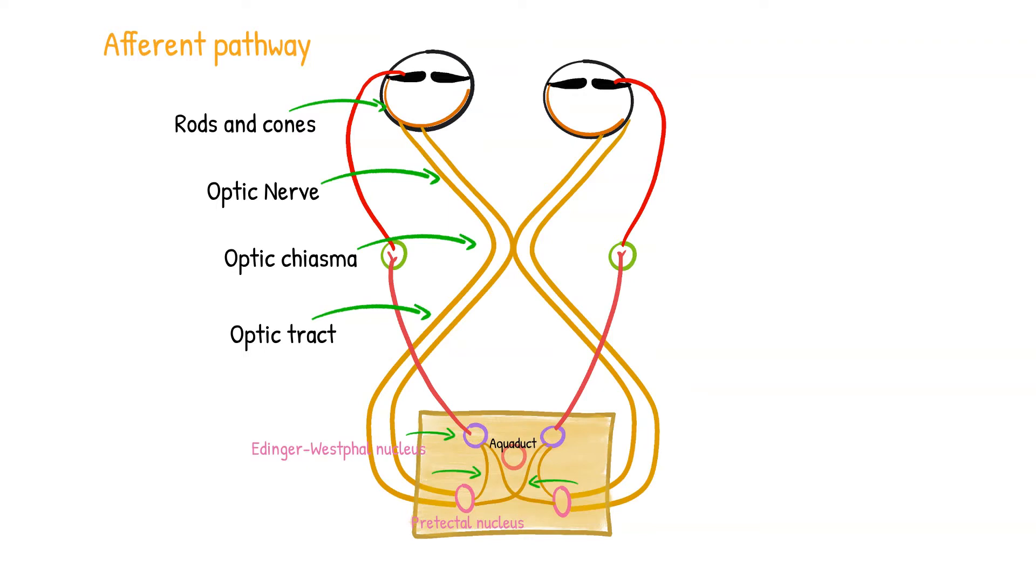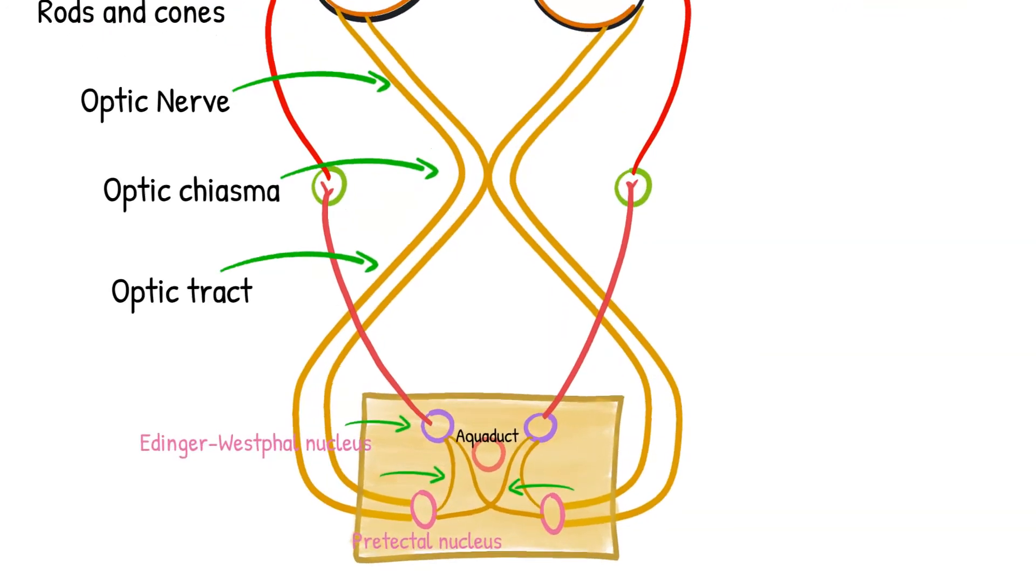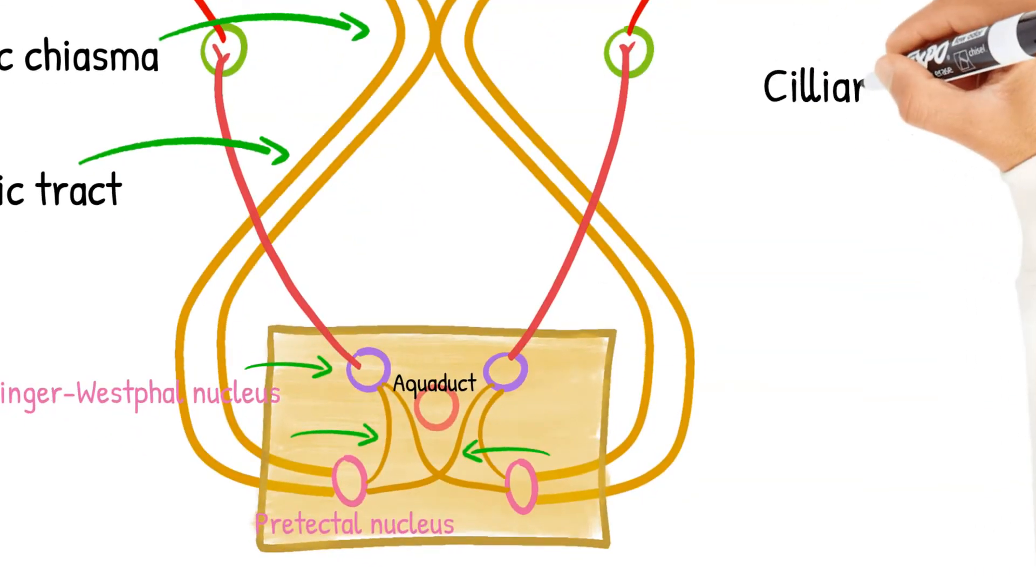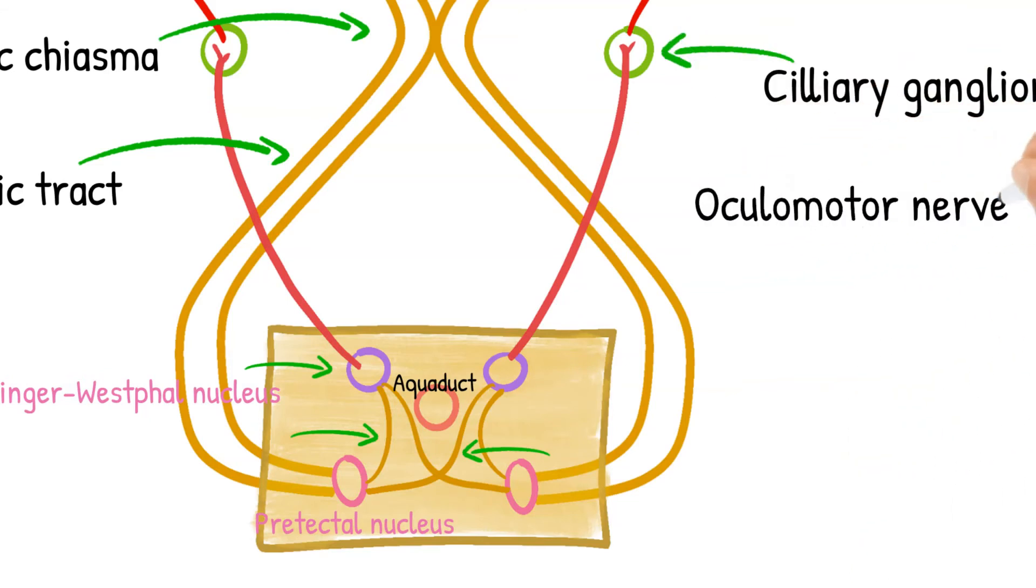From Edinger-Westphal nucleus rises the efferent pathway. Pre-ganglionic parasympathetic myelinated fibers from the Edinger-Westphal nucleus now go to the ciliary ganglion via the oculomotor nerve. After reaching the ciliary ganglion they synapse there.